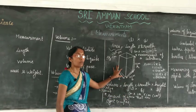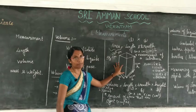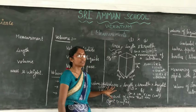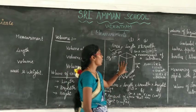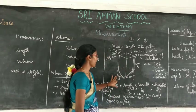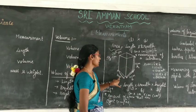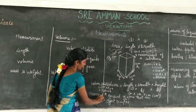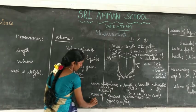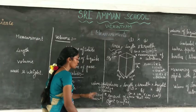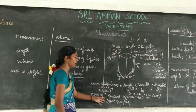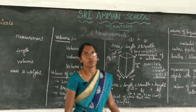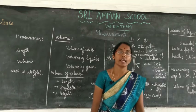For area, we need only length and breadth since it is a two-dimensional measurement. For volume, we need length, breadth, and height. For the cubical box, the volume is 10 × 10 × 10, which equals 1000 centimeter cube. The unit of volume is centimeter cube or cubic centimeter. This is the method for finding area and volume.